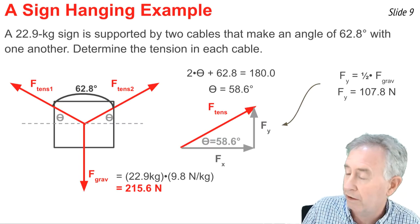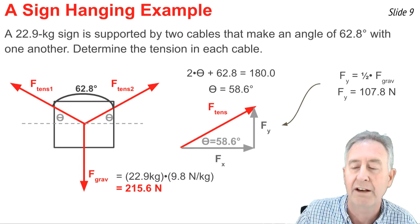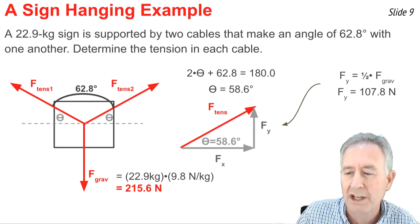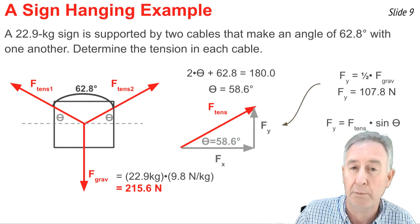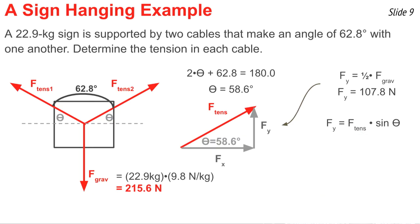Now, that's the side on this triangle that's opposite the theta of 58.6 degrees. So now I can say that that Fy value is equal to the hypotenuse of the triangle, F-tension, times the sine of theta. And now I can rearrange that equation to solve for tension, and say F-tension equal Fy divided by the sine of theta.